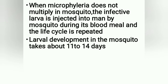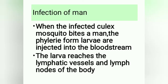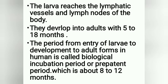Microfilaria do not multiply in the mosquito. The infective larva is injected into man during the mosquito's blood meal and the life cycle repeats. Larval development in the mosquito takes about 11–14 days. When an infected Culex mosquito bites a man, the filariform larvae are injected into the bloodstream, reach the lymphatic vessels and lymph nodes, and develop into adults within 5 to 18 months. This period from larval entry to adult development is called the biological incubation period or pre-patent period — about 8 to 12 months.